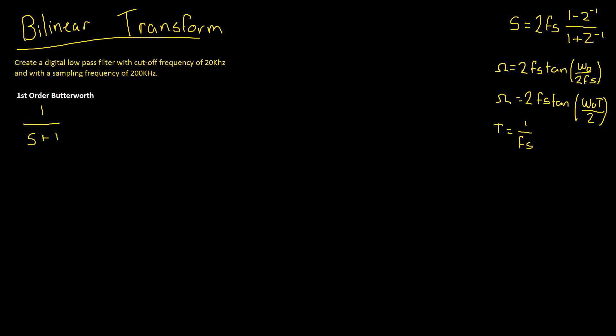Hey, what is going on guys and welcome to another signal processing tutorial. In today's video we're going to cover the bilinear transform, which is another method of converting an analog filter into its equivalent digital filter.